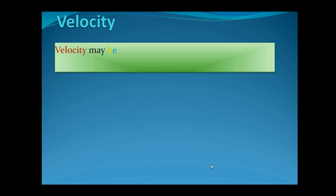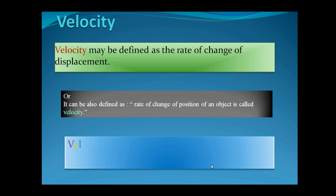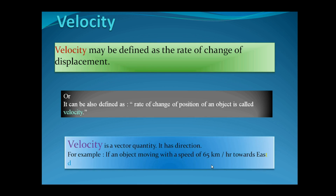Velocity may be defined as the rate of change of displacement, or it can also be defined as the rate of change of position of an object. Velocity is a vector quantity — that means it has direction. For example, if an object is moving with a speed of 65 kilometers per hour towards a specific direction, then we say its speed is 65 kilometers per hour.